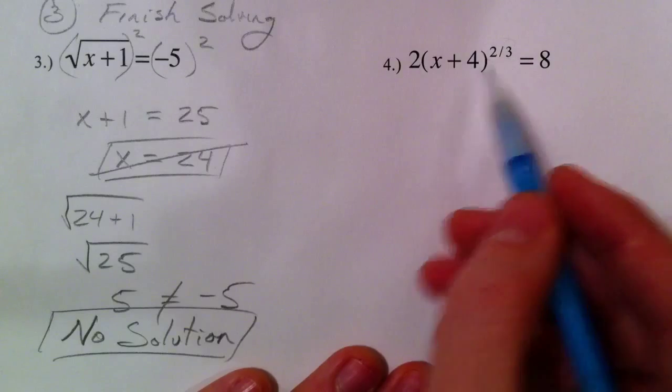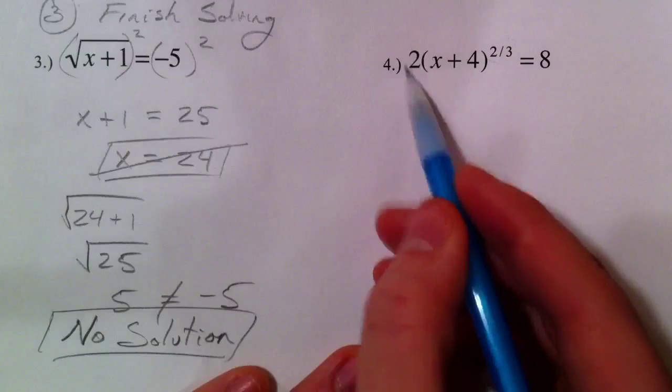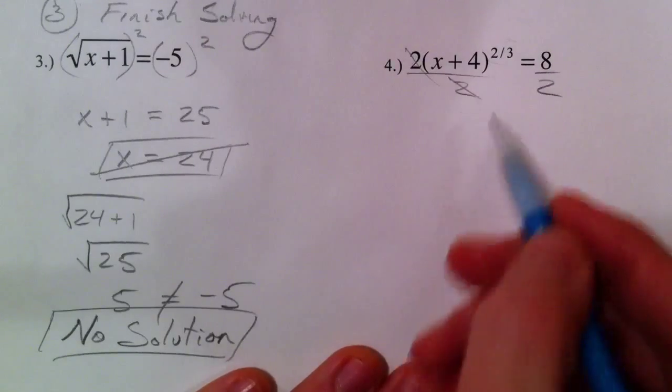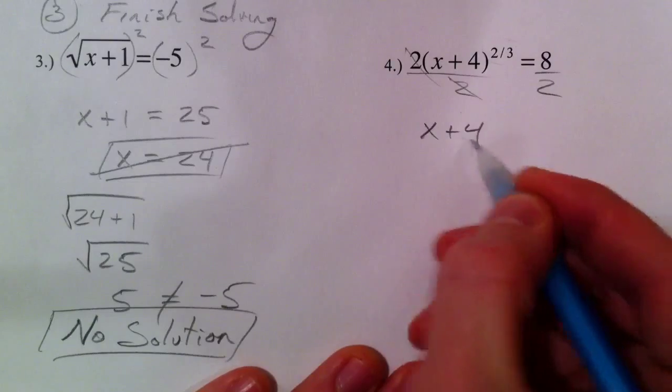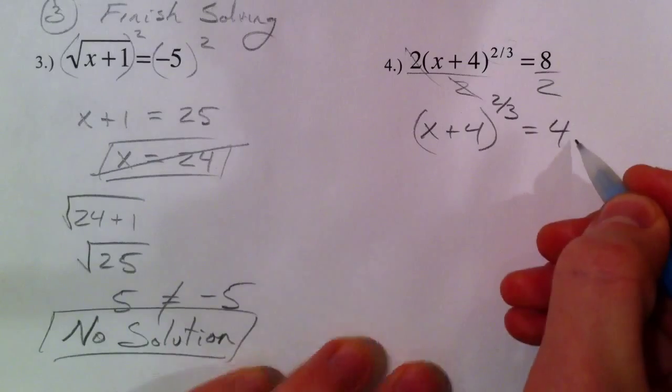Get the power by itself. So before we take the reciprocal power, let's get rid of this 2. You've got to do it by dividing by 2, both sides, and you get x plus 4 to the 2 3rds equals 8 divided by 2, which is 4.